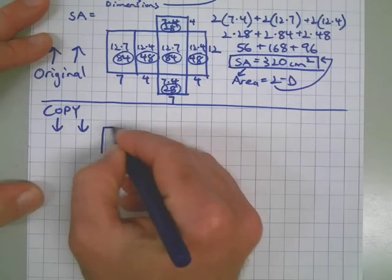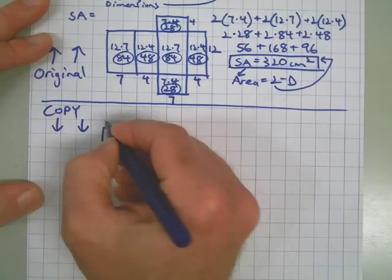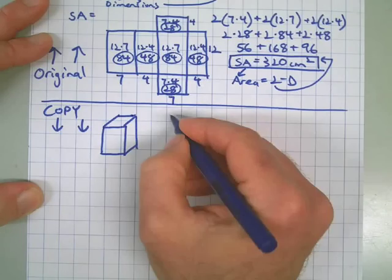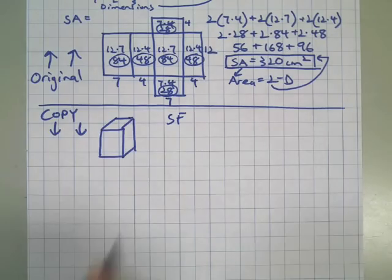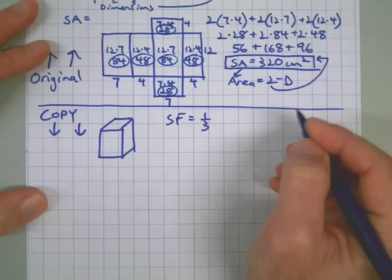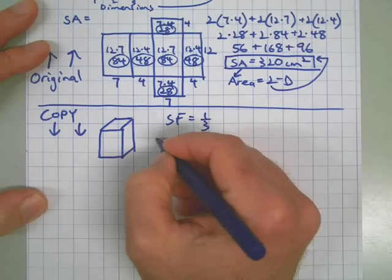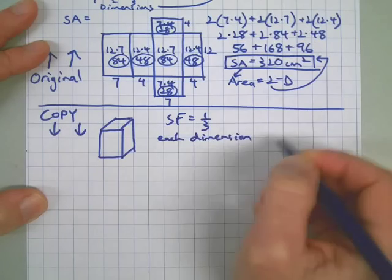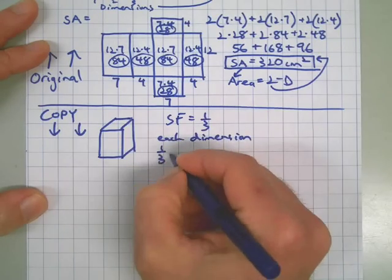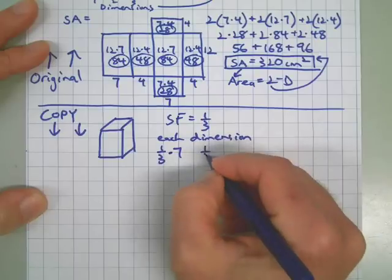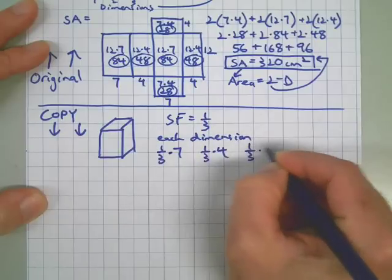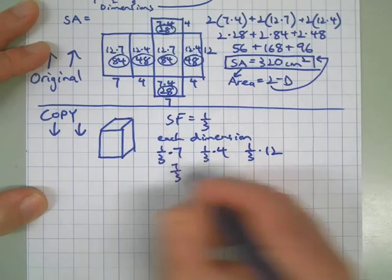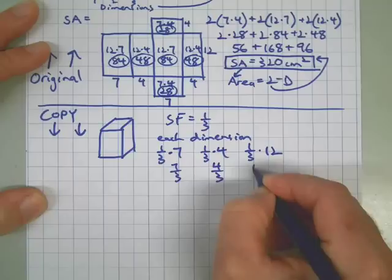Just like up above, we're going to make a little sketch of the copy, just to get the dimensions. Since my scale factor is one-third, that means I'm going to take each of the dimensions, and it's going to be one-third of each dimension. So we have one-third of 7, we have one-third of 4, and one-third of 12. That's just the same as going 7 divided by 3, 4 divided by 3, and 12 divided by 3.